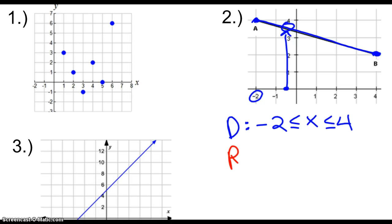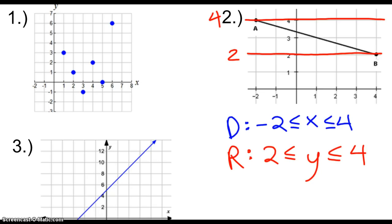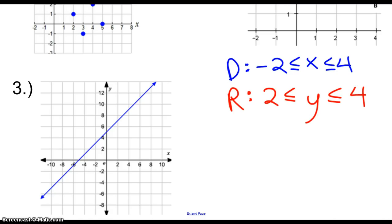Now let's look at the range, which looks at my y values. We're going to look vertically. My lowest point is positive two and my highest point is positive four. So y can be any value between two and four. And that's how we write out the domain and range for that particular line segment.